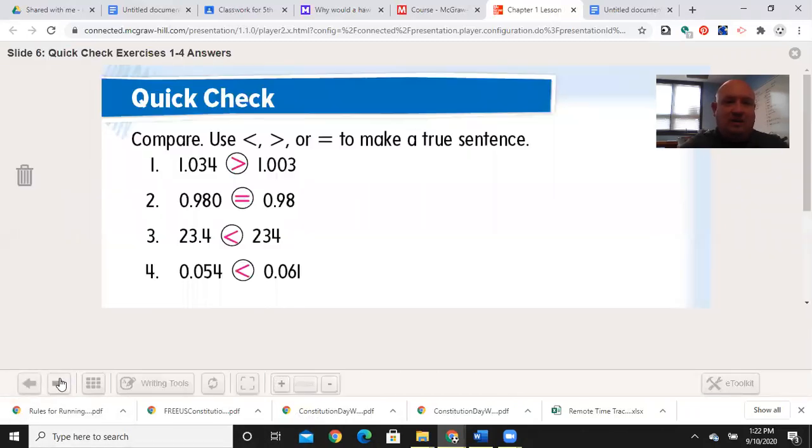Welcome back. Let's see how you did. We have 1 and 34 thousandths is greater than 1 and 3 thousandths. And we noticed we had a 1, we had a 0, but once we get here, 3 is greater than 0, and that's why it's greater.